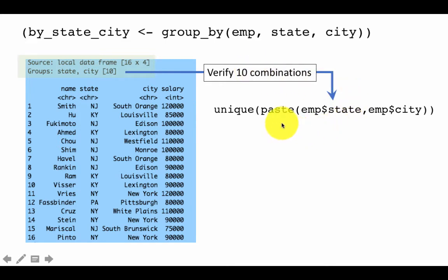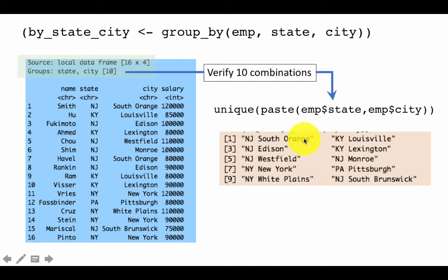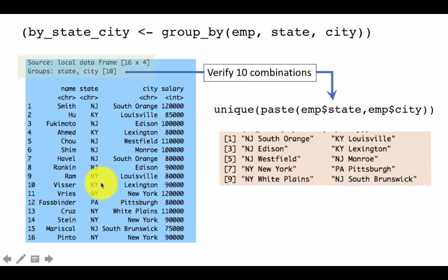To verify there are 10 unique combinations, we can use paste(m$state, m$city) to concatenate them and then call unique() on the result. This yields 10 unique values: NJ South Orange, KY Louisville, NJ Edison, NJ Westfield, KY Lexington, NJ Montreal, and others — confirming the 10 groups reported. The full 16 rows of data are shown, but there are only 10 groups.